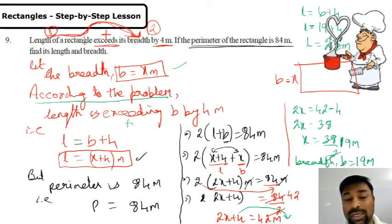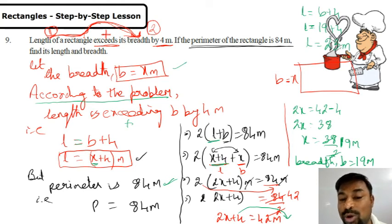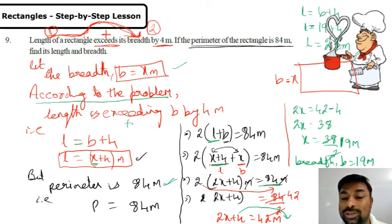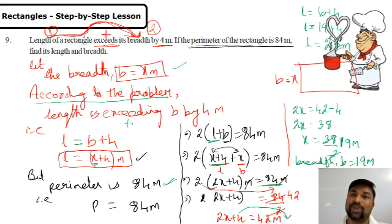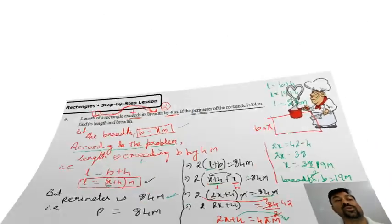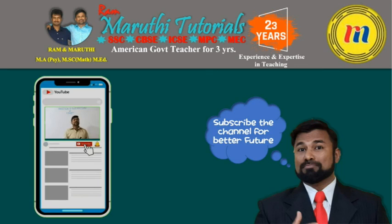Breadth is x, so length equals x plus 4. Perimeter is 84 meters. Using 2(l+b), plugging in x plus 4 for length and x for breadth, simplifying: 2 into (2x plus 4) equals 84, divide by 2 gives 42, subtract 4 gives 2x equals 38, so breadth is 19 meters and length is 23 meters. Hope you understand simple linear equations applied to rectangles. Thank you — in this channel I place both math and science videos.